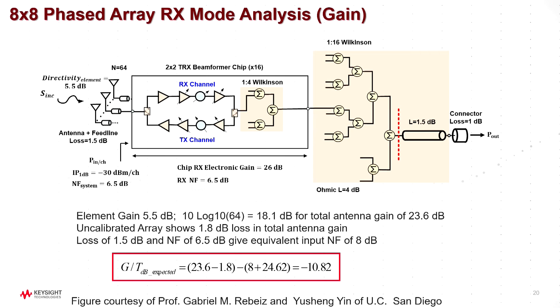So using that eight by eight sample array, and this is in the paper, it shows you all the different stack-ups of all the losses and gains. And this particular antenna, we would expect a G/T of about minus 10.82 dB.